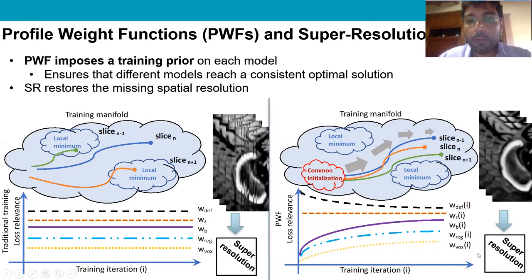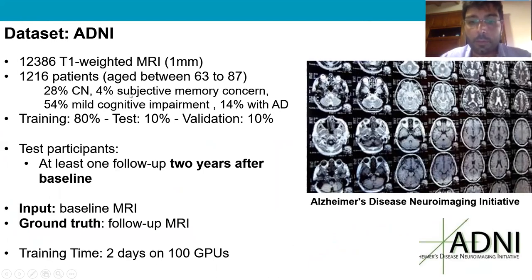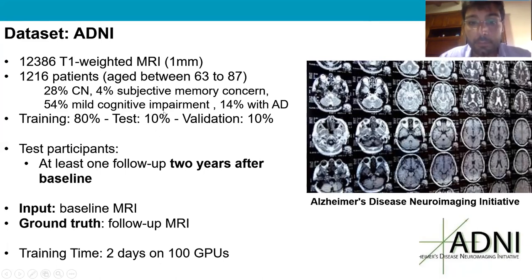In our experiment, we used 12,386 pre-processed T1-weighted MRI scans from 1,216 participants in the ADNI study. Participants were aged between 63 and 87 years old: 28% were cognitively normal, 4% had been diagnosed with subjective memory concerns, 54% with mild cognitive impairment, and 14% with Alzheimer's disease. We divided our dataset into a training set of 80%, a test set of 10%, and a validation set of 10%. In the test set, we ensured that participants had at least one follow-up visit two years after baseline to allow sufficient time for observable neurodegeneration to occur.